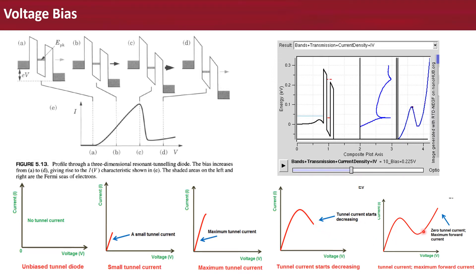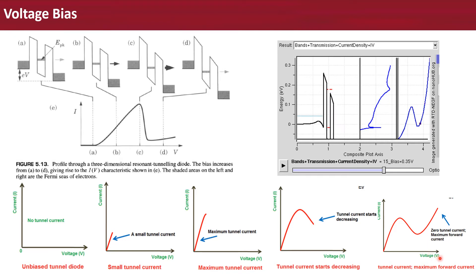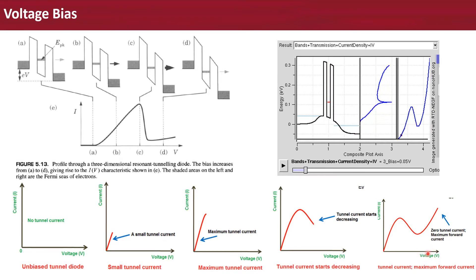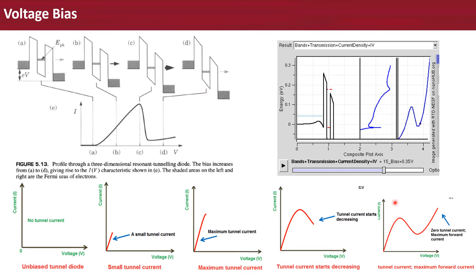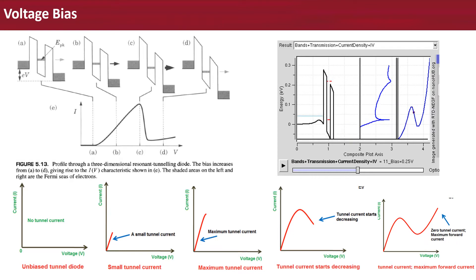The third region is the second positive resistance region, similar to the first region. As the second confined state becomes closer and closer to the source Fermi level, it carries a small current causing the total current to increase again, falling into the region with minimum tunneling current and rising forward current.